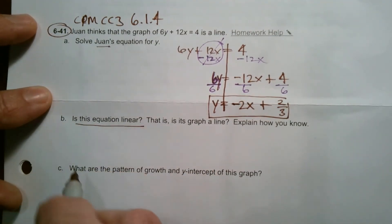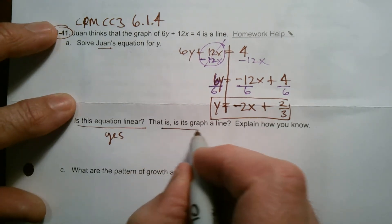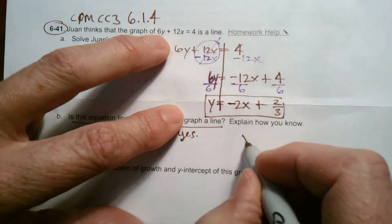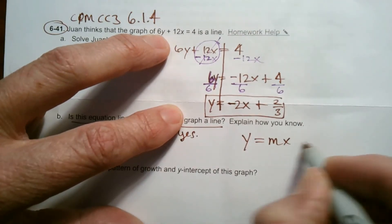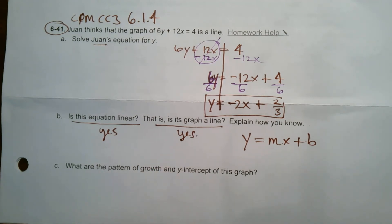It asks, is this linear? Well, yes, it is. And how do we know? Is this graph of a line? Yes, it is. And how do I know? Because y equals mx plus b is the form of a line.